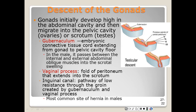Both the male and female gonads initially develop near the kidneys and then start to descend — dropping into the pelvic cavity. The ovaries will drop into the pelvic cavity, and the testes will drop into the scrotum region.